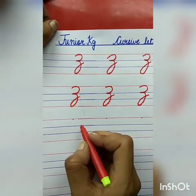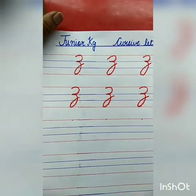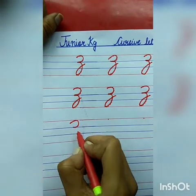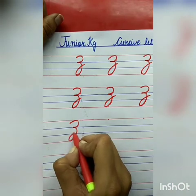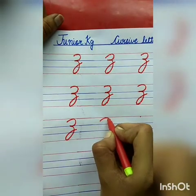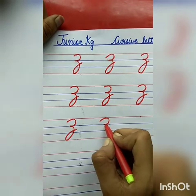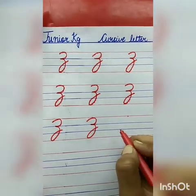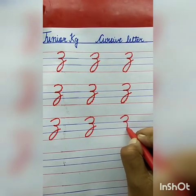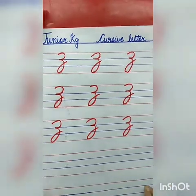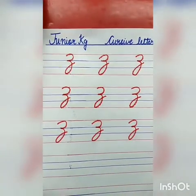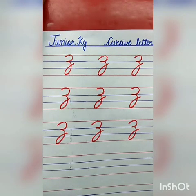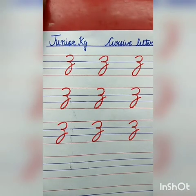Now here you are not given the dots — aapko dots given nahi hai. So aapko kya karna hai? Without tracing, likhna hai. See here and start from here: draw a semicircle, slanting line, curve line. Again: semicircle from the red line to the first blue line, then slanting line to the second red line, then curve line. Z for zebra. Now what you have to do? You have to do homework and practice the cursive letter alphabets. Then click a picture and send it to the school WhatsApp number. This is your homework. Till then, take care and keep studying.